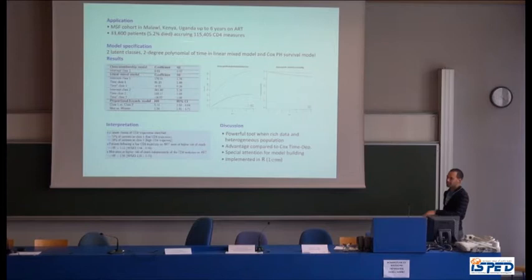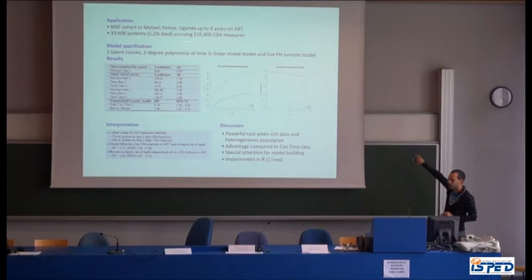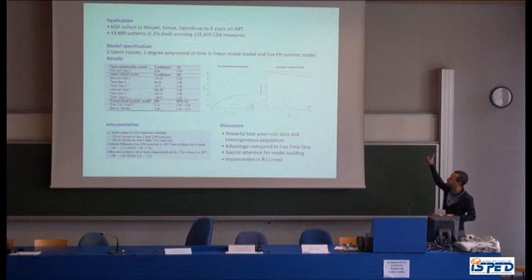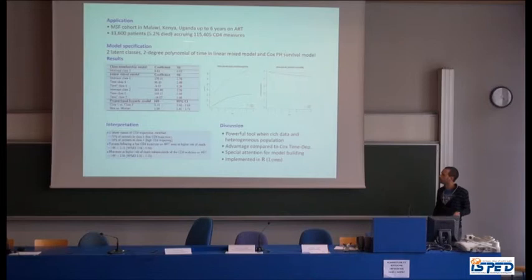Looking at the graph: on the left is the representation of the two latent classes, the two longitudinal profiles. On the top are patients who follow the high CD4 trajectory all the time, and on the bottom, patients who follow the low CD4 trajectory. On the right is the class-specific event survival probability. Patients with a high CD4 trajectory have a higher survival rate, and patients following the low CD4 trajectory have a lower survival rate.